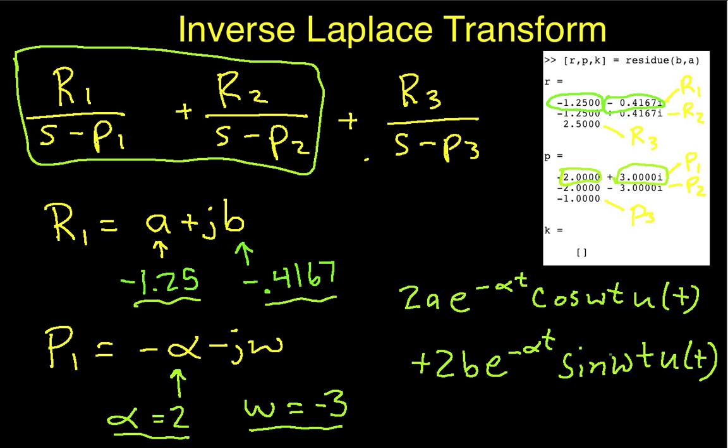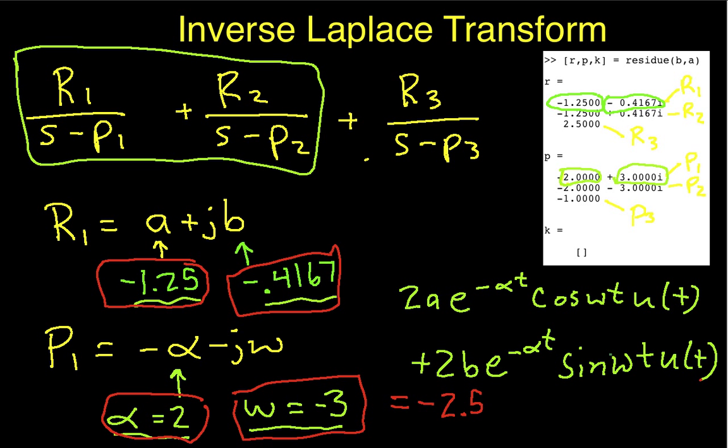And so, we know that A has this value, B has this value, alpha has this value, omega has this value. If we plug those in, 2 times A is going to be minus 2.5 e to the minus 2t cosine minus 3t u of t plus 2b,